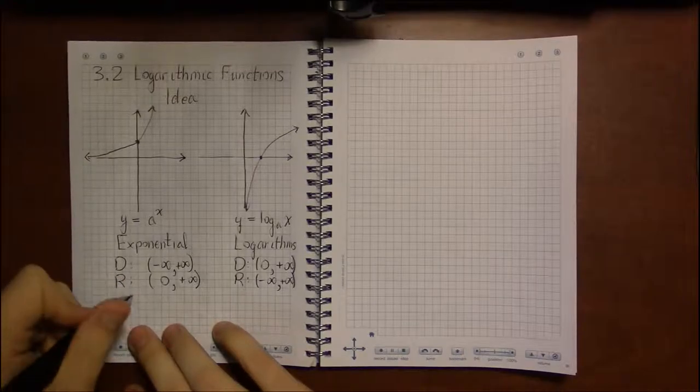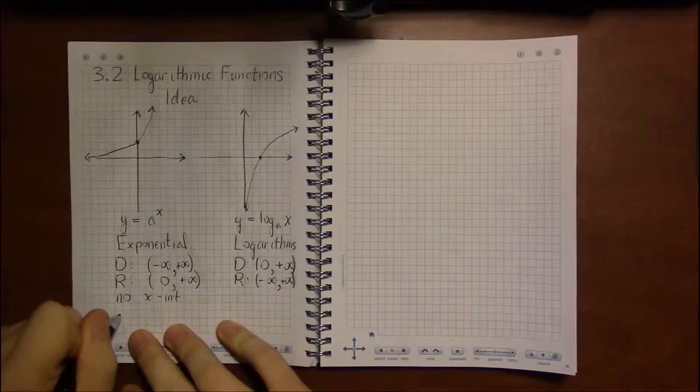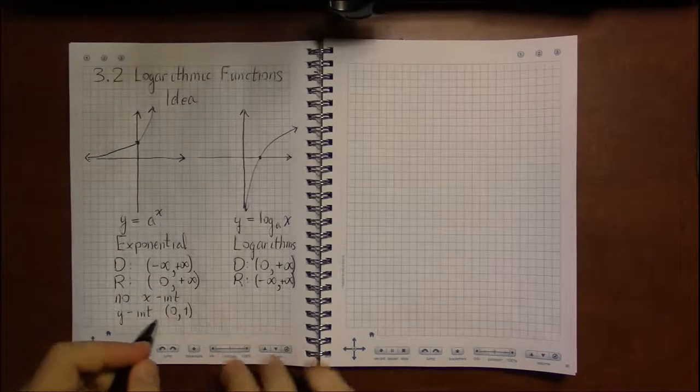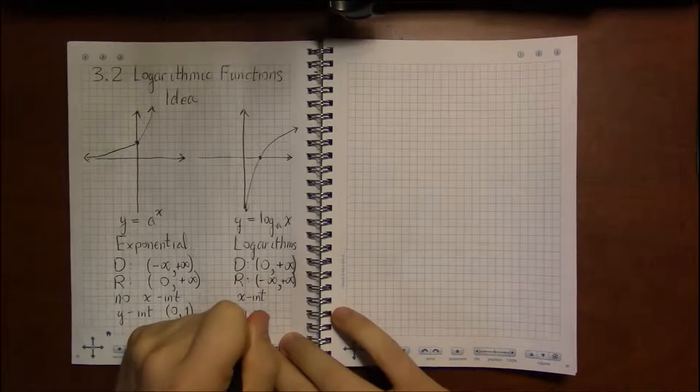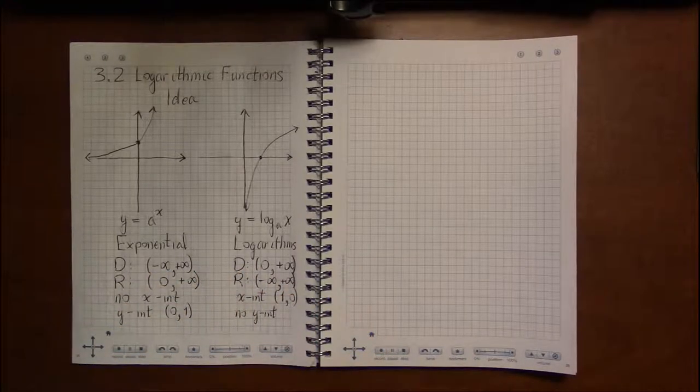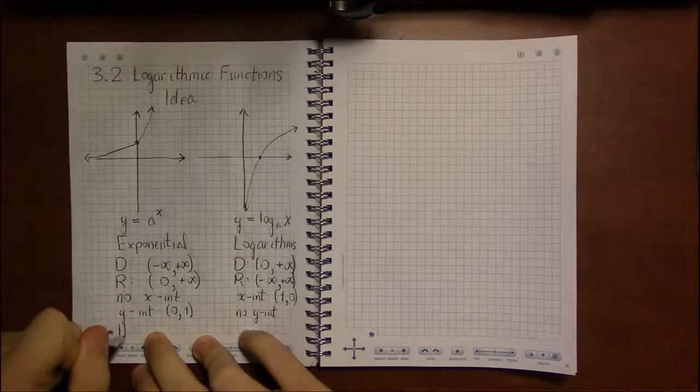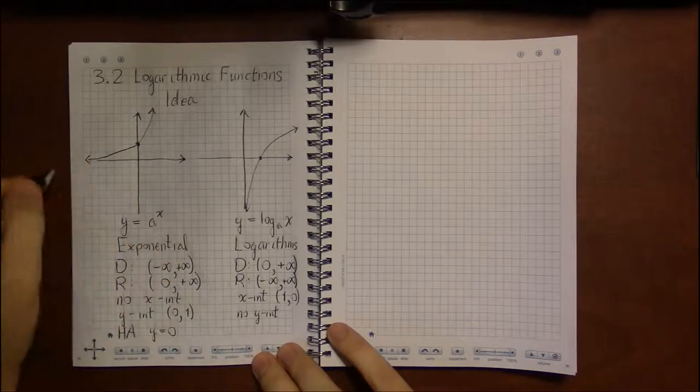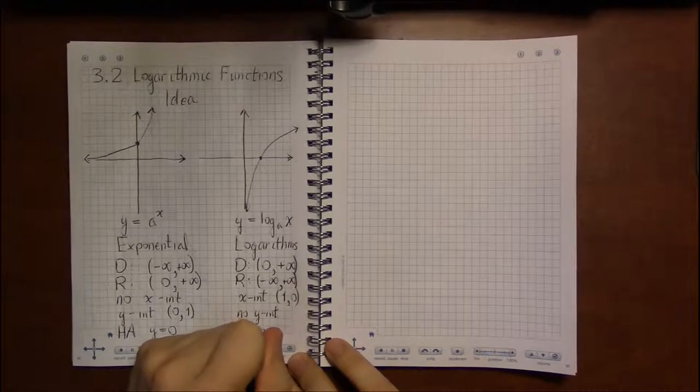The exponential functions had no x-intercept, but had a y-intercept of (0,1). Well, this is going to be kind of flipped for logarithms. Logarithms will have an x-intercept but no y-intercept, and the x-intercept will be flipped itself at (1,0). And exponential functions have a horizontal asymptote of y equals zero, and so this kind of flips around. The logarithm has a vertical asymptote of x equals zero.